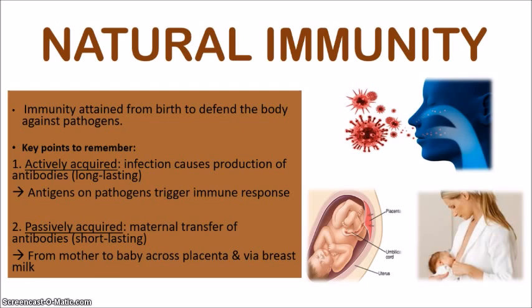The other type is passively acquired natural immunity, which is related to the maternal transfer of antibodies — immunity passed from the mother to the baby. It can occur while the mother is pregnant and the baby is in the womb, with antibodies passing across the placenta. It can also occur after birth, when the baby receives antibodies from the mother's breast milk. However, this passively acquired immunity is short lasting, because the baby is not producing its own antibodies — it's just receiving them from the mother, so eventually those antibodies wear off and the baby needs to build up its own immune system.